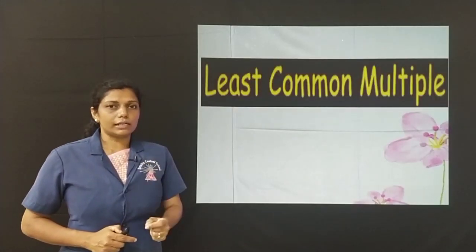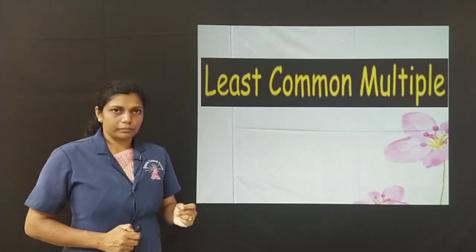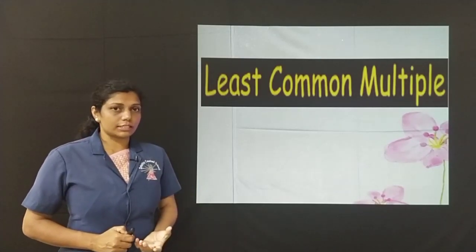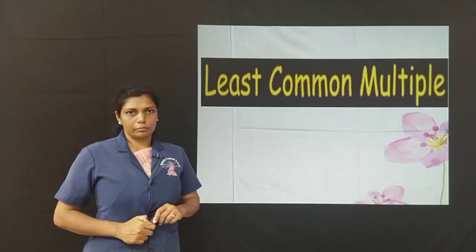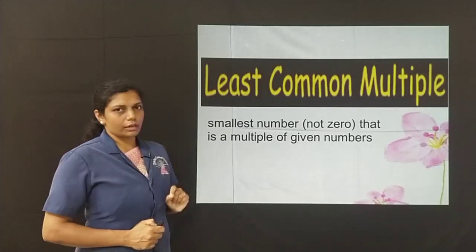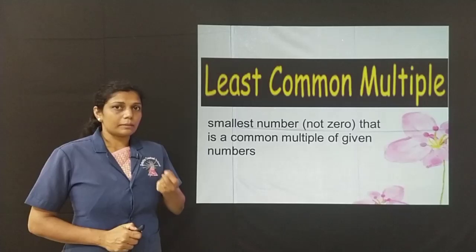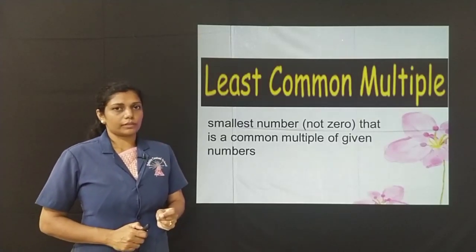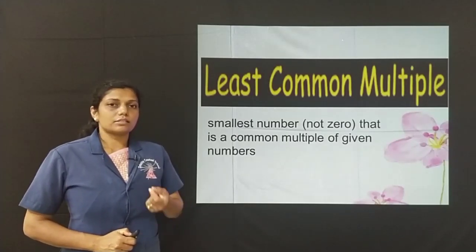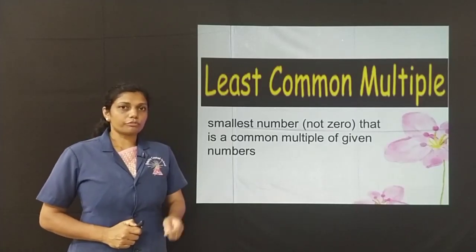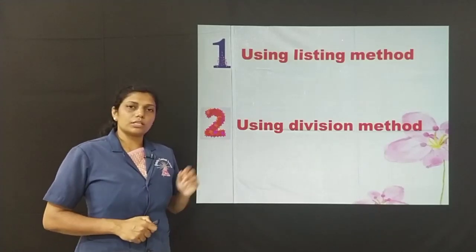The next is least common multiple, LCM. Least common multiple — in short we call it as LCM. The name itself suggests that it is a common multiple, but the smallest one, the least one, the first one which is common among the given numbers. Smallest number that is a multiple of the given numbers. If two or more numbers are given, we have to pick a number which is a common multiple of all the given numbers, plus it should be the smallest number. The multiples which are common to the given numbers and the smallest common multiple — such a multiple is called the least common multiple.